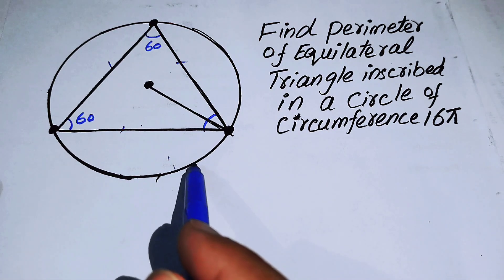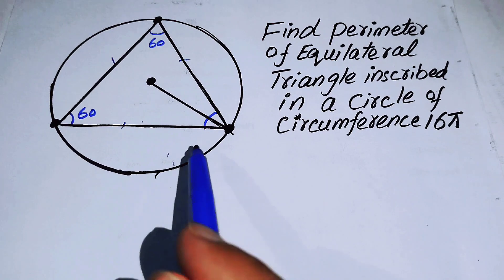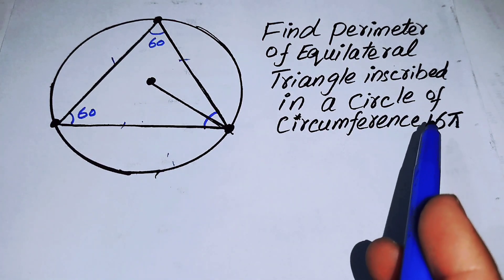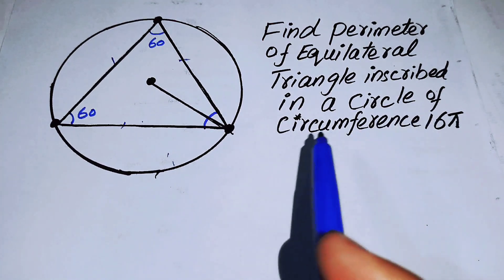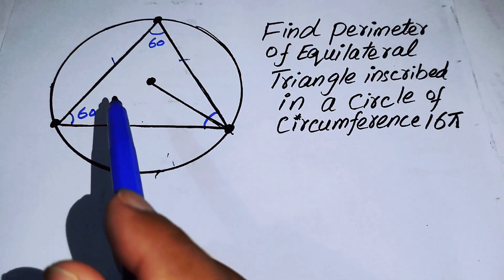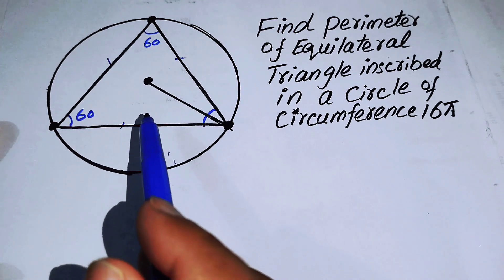We have a circle whose circumference is 16π, and from that we can find the perimeter of this equilateral triangle.